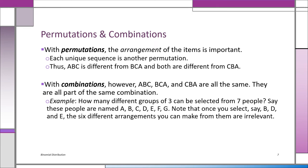Now we're going to talk about permutations and combinations. With permutations, the arrangement of items is important — each unique sequence is another permutation. Thus ABC is not the same as BCA, which is not the same as CBA. With combinations, ABC, BCA, and CBA are not counted as three separate arrangements — it's the same combination, because the same three letters appear in all of them.